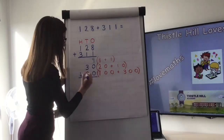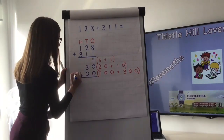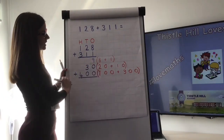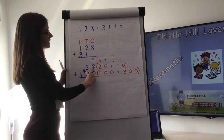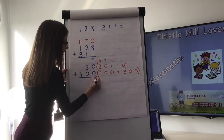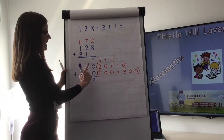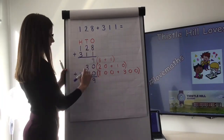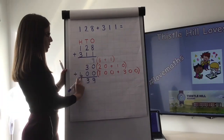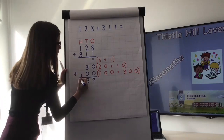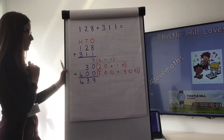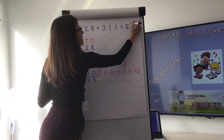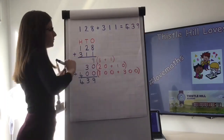Now we need to add our three numbers together, so I'll place another addition symbol here. Starting with the ones again: nine add zero add zero is nine. Then 30 add zero is 30, so we place a three in our tens column. And 400 add nothing is 400, so we place a four in our hundreds column. Our answer is 439.